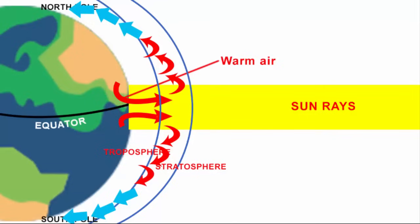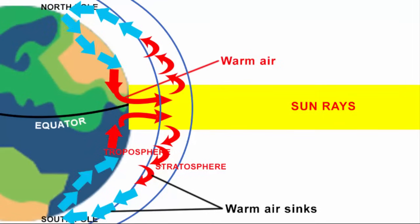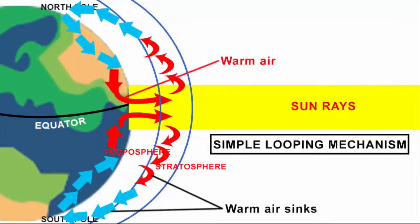At higher altitudes the warm air cools and sinks, drawing more and more warm air behind it. Meanwhile the cooled air flows towards the equator creating a simple looping mechanism. It's an endless repetition.